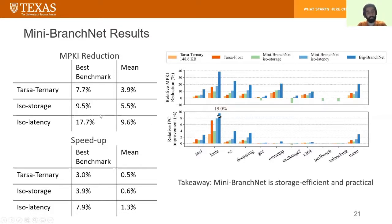We show that BranchNet gives us significant amount of MPKI reduction, both compared to the TAGE baseline and even compared to our prior work, Tarsa ternary. We also get a good amount of IPC improvement, especially in the ISO latency setting.